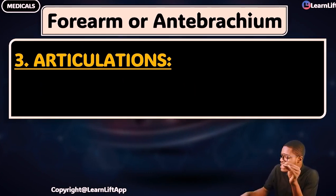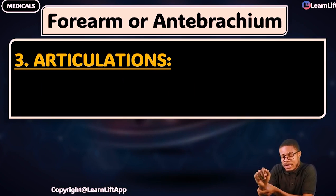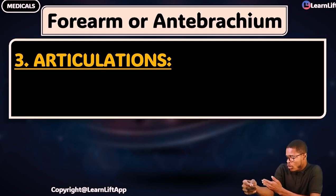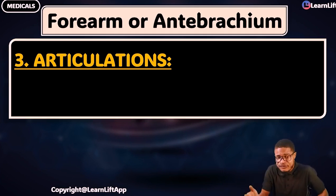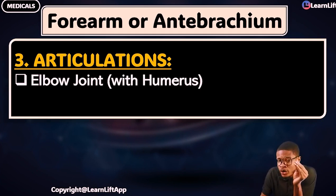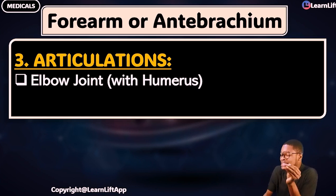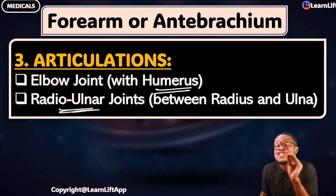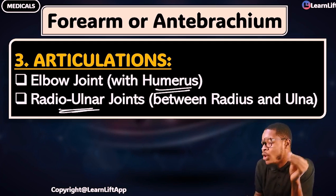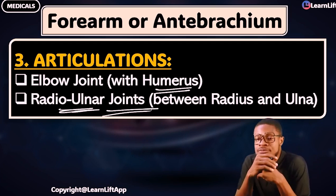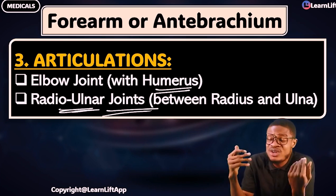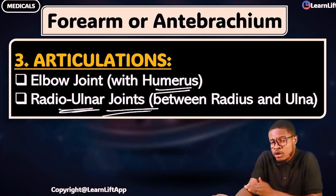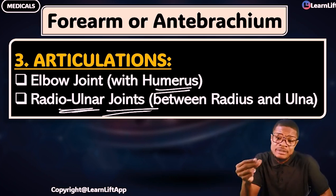What are the articulations of the forearm or anti-brachium? There are two joints: one superior and one inferior. Number one is the elbow joint, where it articulates with the humerus. Number two is the radio-ulnar joint — the joint between the radius and the ulna — forming the radio-ulnar joint.